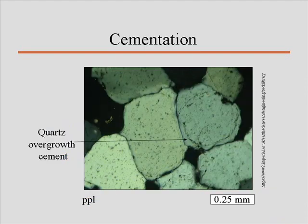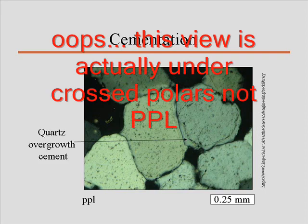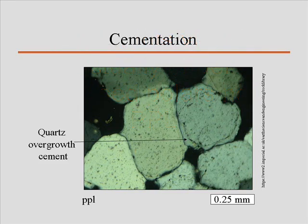Let's look at some cements to give you an idea of what the pictures look like. I've been pushing the idea of quartz overgrowth cements, and here's a nice illustration. In plain polarized light, here is the original grain edge — this is not so much a dust coating as it is a little bit of hematite stain. This is all cement. There's the original grain with the original edge, and notice how the extinction of the quartz is identical in both the cement and in the grain — that's what I'm talking about with optical continuity.